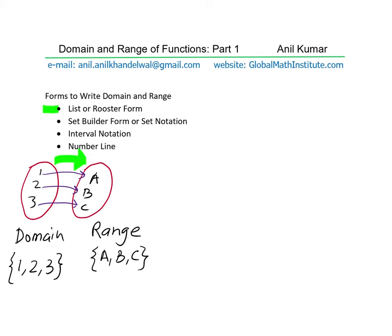Each individual value is an element. These elements form the input, and the range is the output. Now let's talk about the second form, which is the set builder form, also called set notation. Let's take another example to see when you would use the set builder form.